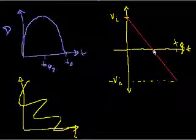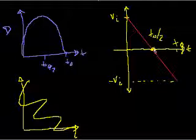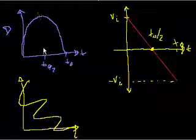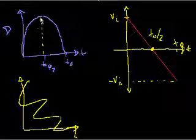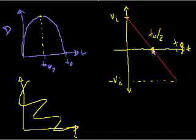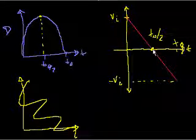So this point right here, which is t sub 0 over 2, that corresponds to this point, right? Which makes sense, because that's the point at which the ball has no velocity. And look, the velocity is 0.